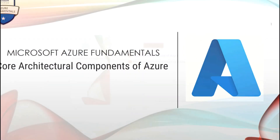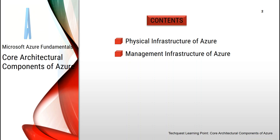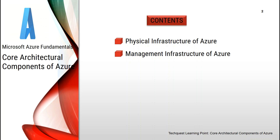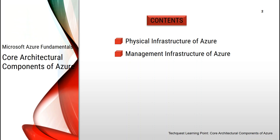In this tutorial you will be introduced to the core architectural components of Azure. I will discuss about the physical organization of Azure data centers, availability zones and regions, and the organizational structure of Azure resources, resource groups, subscriptions, and management groups. The exam AZ-900 Microsoft Azure Fundamentals includes three knowledge domain areas: one, describe cloud concepts; two, describe Azure architecture and services; and three, describe Azure management and governance.